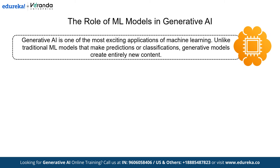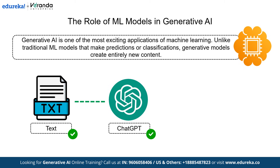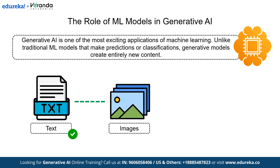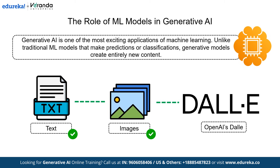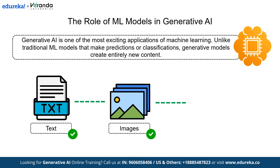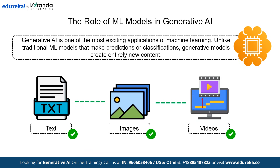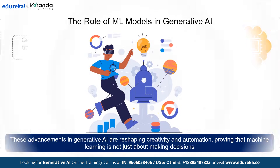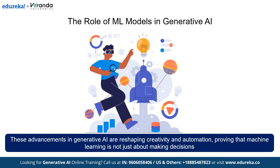Here's how ML enables AI to generate. For text, language models like GPT generate human-like text for chatbots, content writing, and coding. For images, AI-powered tools like DALL-E can create realistic images from textual descriptions. For videos, advanced ML models synthesize lifelike video content, transforming media, marketing, and even filmmaking. These advancements in generative AI are reshaping creativity and automation, proving that machine learning is not just about making decisions — it's about creating new possibilities.